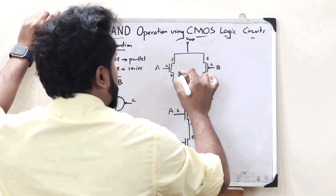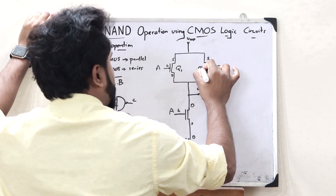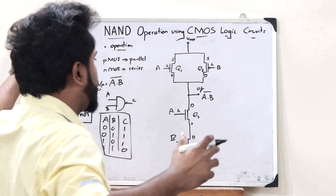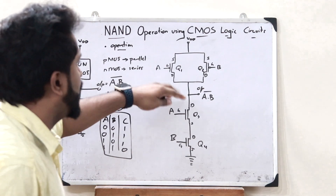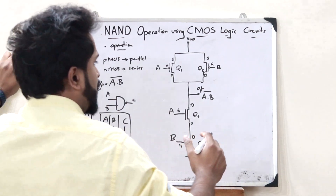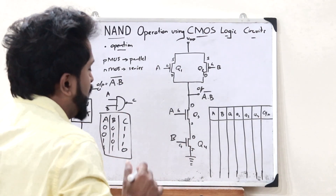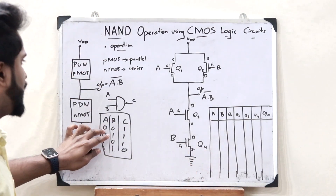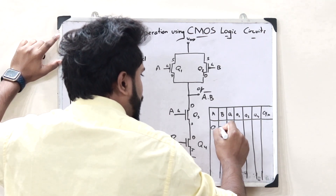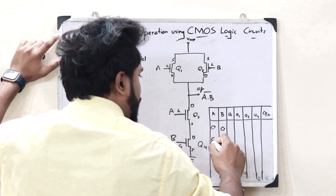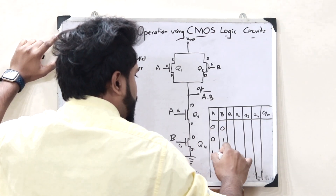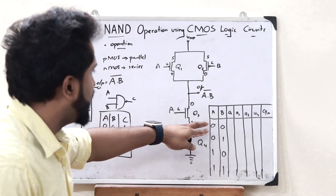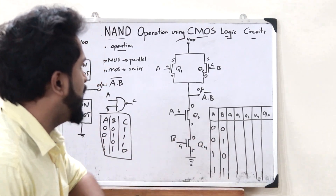Let us label these transistors as Q1, Q2 (PMOS, pull-up network) and Q3, Q4 (NMOS, pull-down network), and see the working of this logic circuit. We have four input cases: A=0,B=0; A=0,B=1; A=1,B=0; and A=1,B=1. Let us first see the case when both A and B are 0.